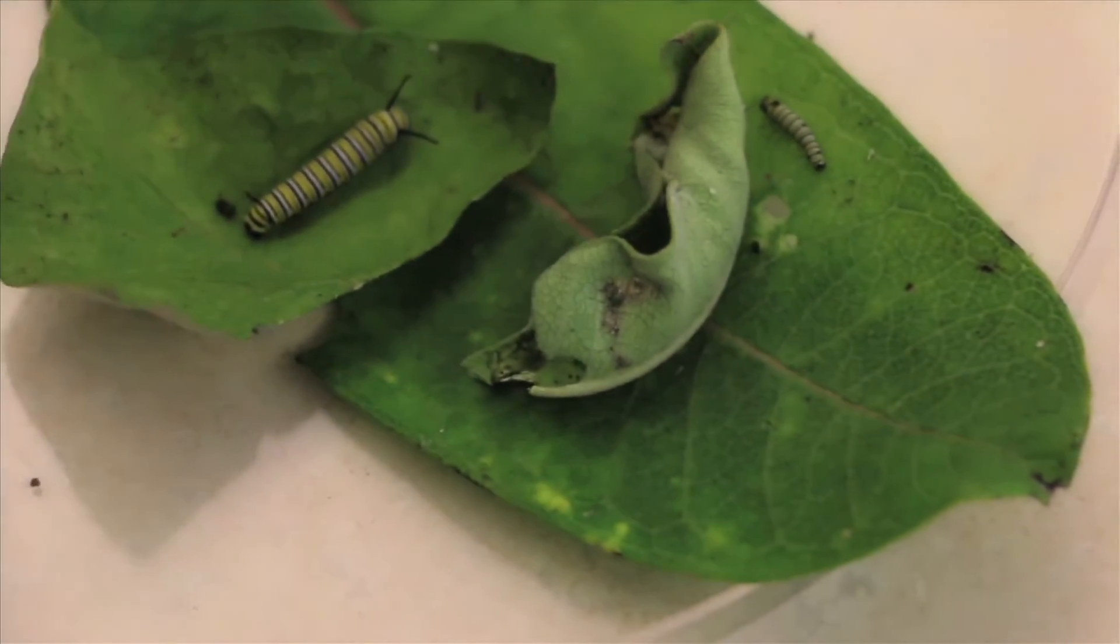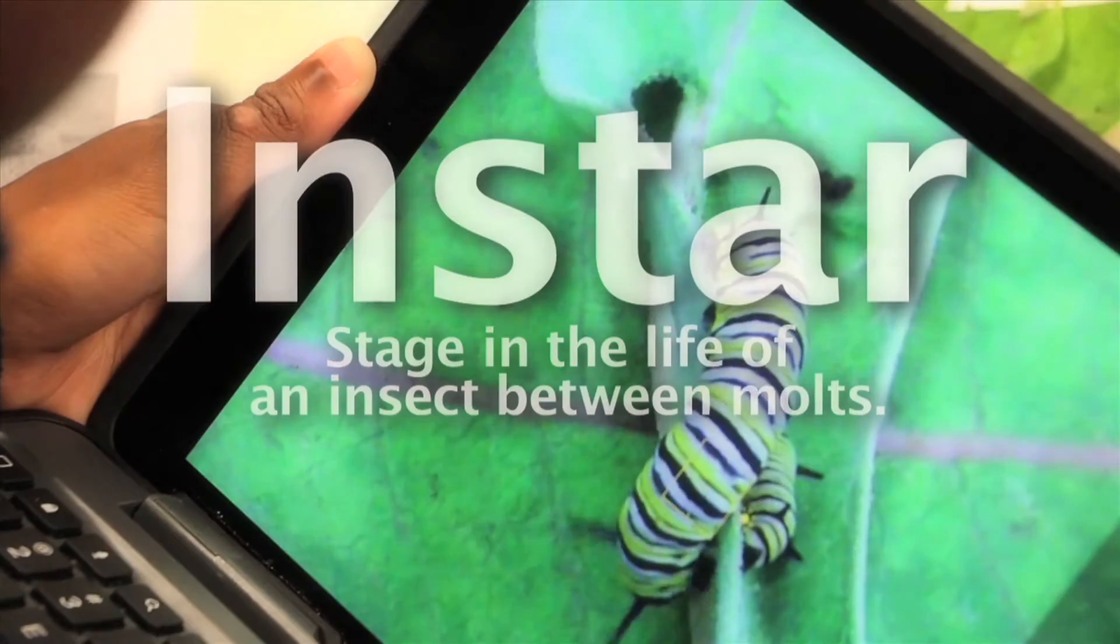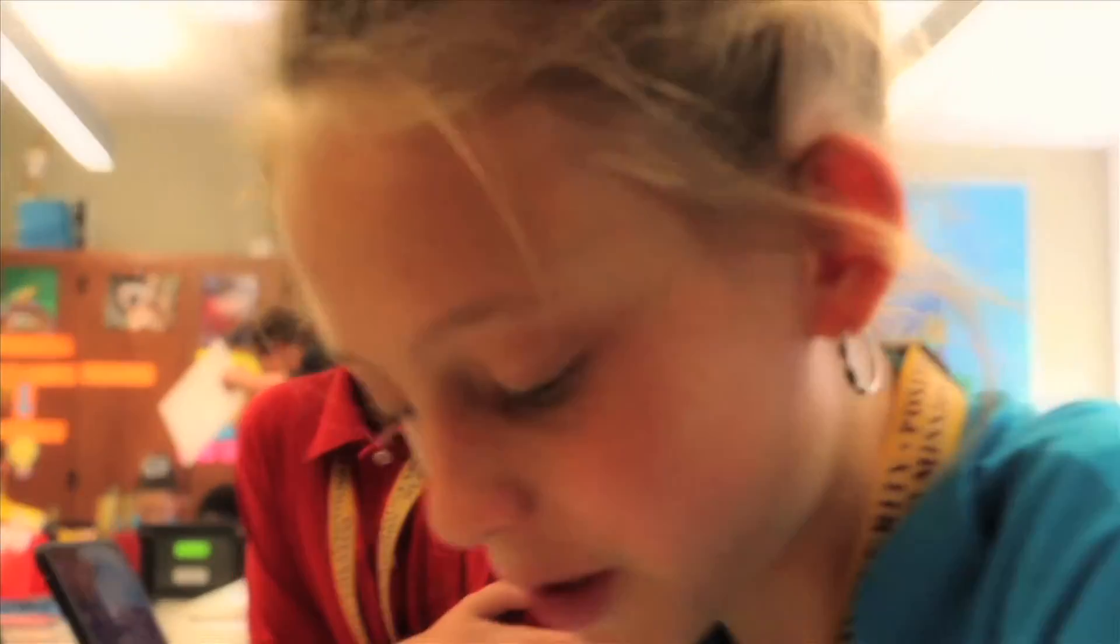Right now, it's just a caterpillar. My question is, what is it doing? It's going through something called instar, which is a stage in the life of an insect between molts. No, it's the third instar because the stripes are more distinct.